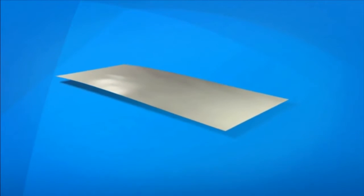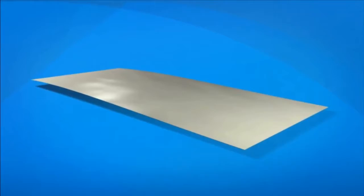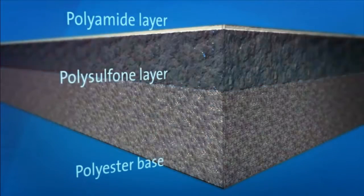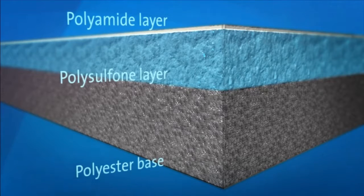These membranes are constructed from a membrane flat sheet. It is comprised of three layers: a polyester fabric support base, a microporous polysulfone layer, and a 0.2 micron thick polyamide barrier layer.